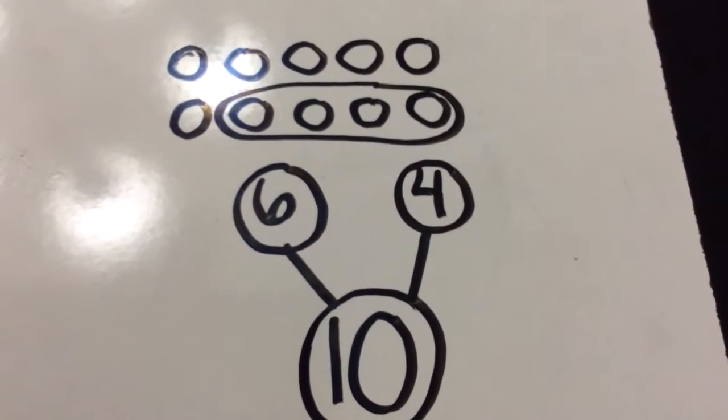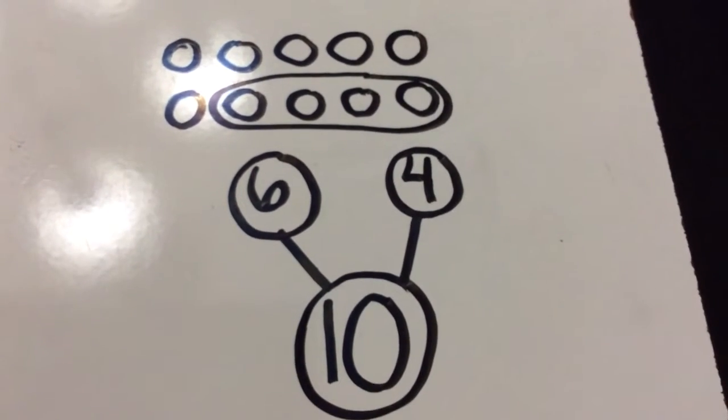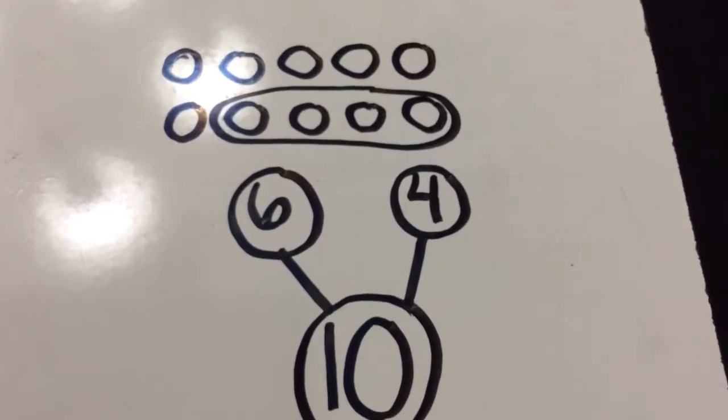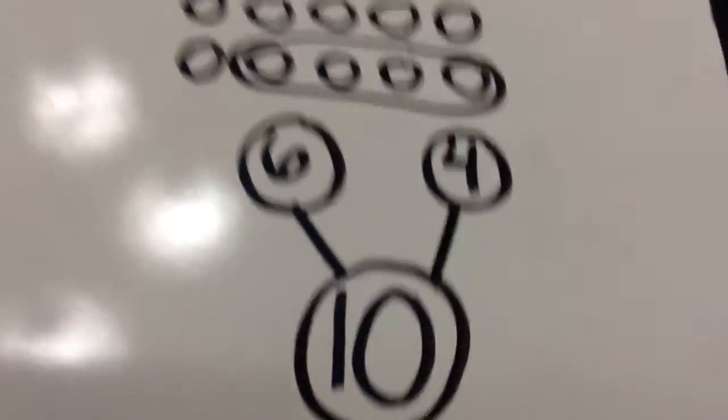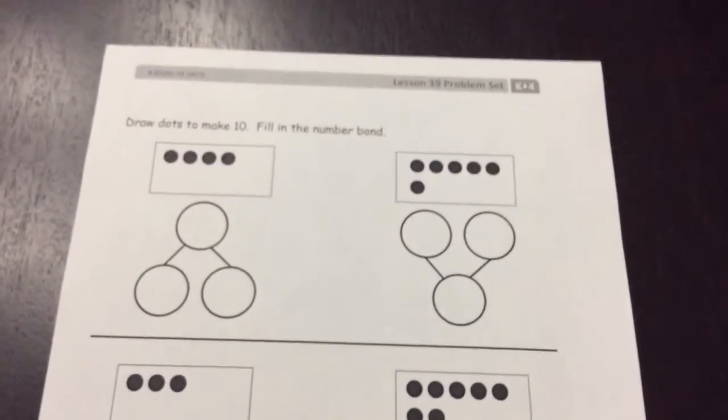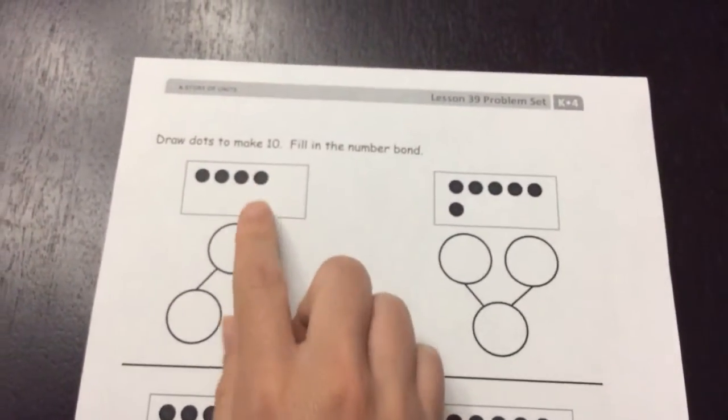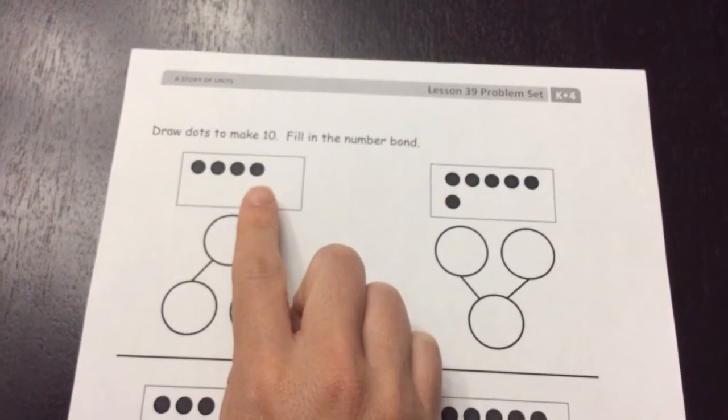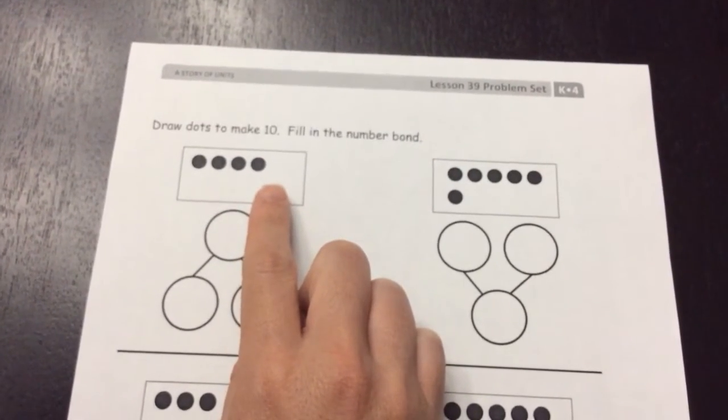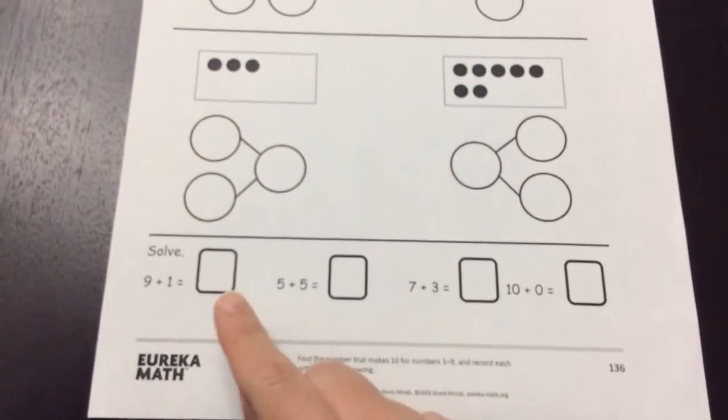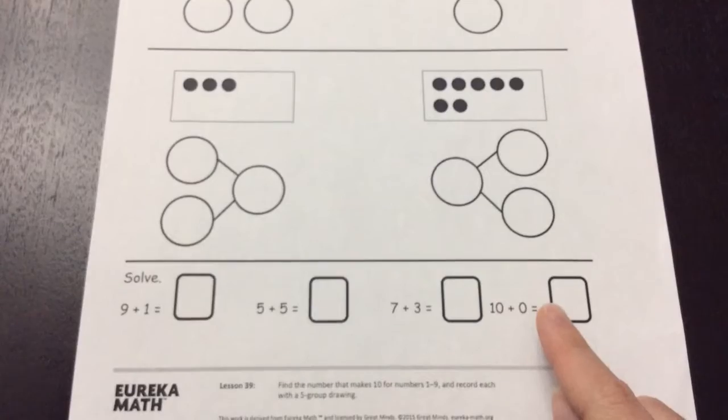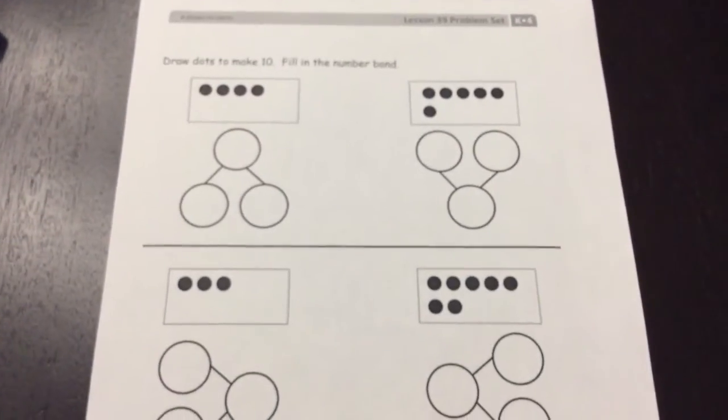Today you are going to make the number ten by drawing the five group way and working with number bonds. Let's look at your worksheet you're going to do. I want you to draw more dots to make ten and fill in the number bond. Below is your challenge. You can do it.